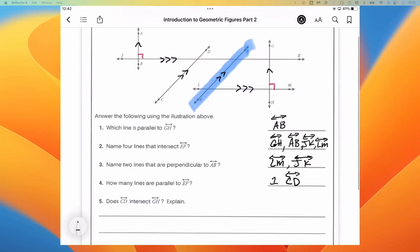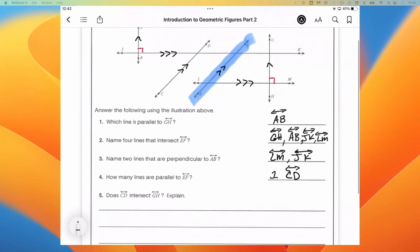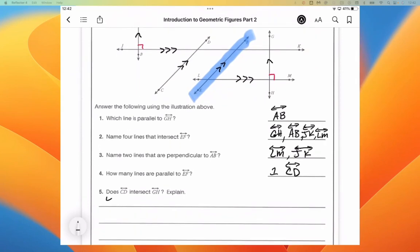And then does CD intersect GH? CD intersect GH. Yes, it does. If we extend both lines, they would intersect.